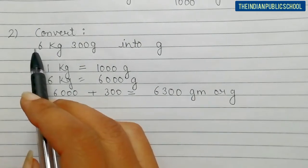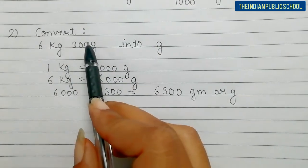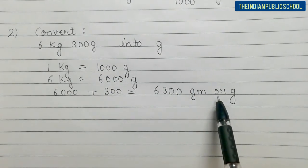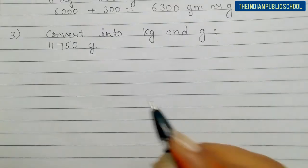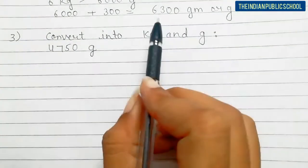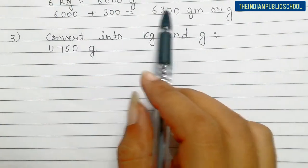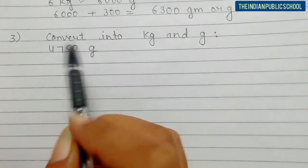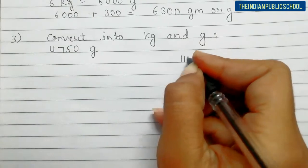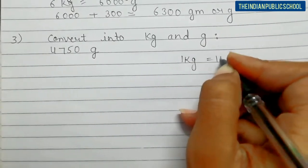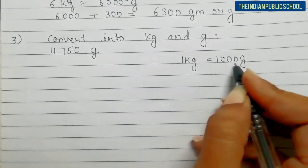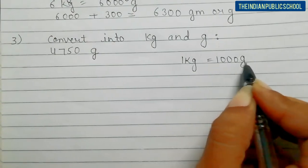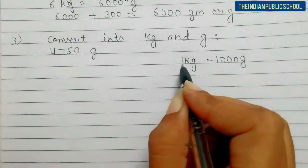So you will convert the kg part into grams and add the remaining grams part - that gives the total in grams. Now we will do one more question: convert into kg and grams. In the previous question we converted kg and grams totally into grams, but here we convert grams into kg and grams. You know 1 kg equals 1000 grams. So 1000 grams equals 1 kg, 2000 grams equals 2 kg, 9000 grams equals 9 kg.